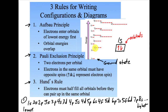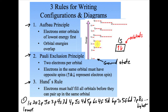Hund's rule comes into play when we get to the 2p. For the 2p, we have three boxes. What we do is put electrons into each of these orbitals first, then double up. The electrons have to half-fill each orbital before they can double up in the same orbital. This doesn't matter for the s's — it only starts in the p's, d's, and f's. I have to put one in each — one, two, three — and then I start doubling up.